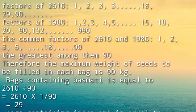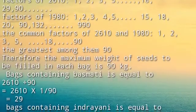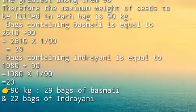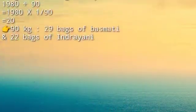Students, bag containing basmati is equal to 2610 divided by 90. So that the answer is 29. And bag containing indrayani that is 1980 divided by 90. It will be 22. So, for 90 kg, 29 bags of basmati and 22 bags of indrayani.